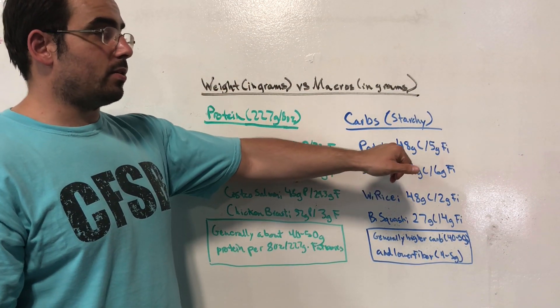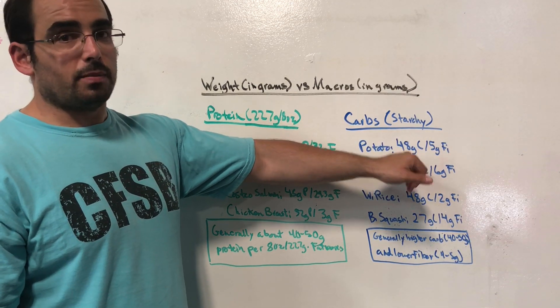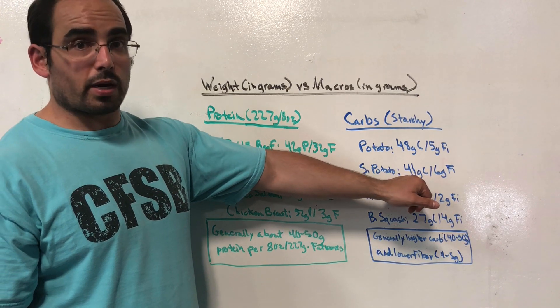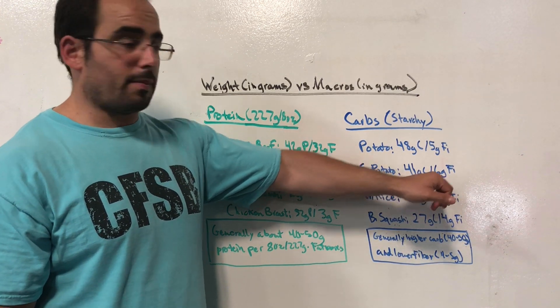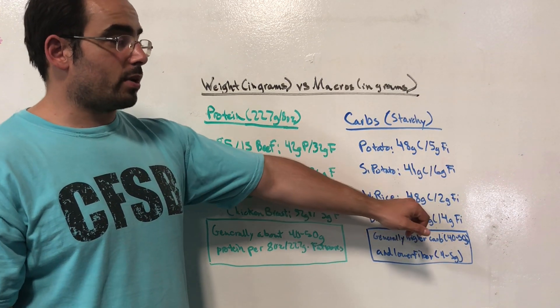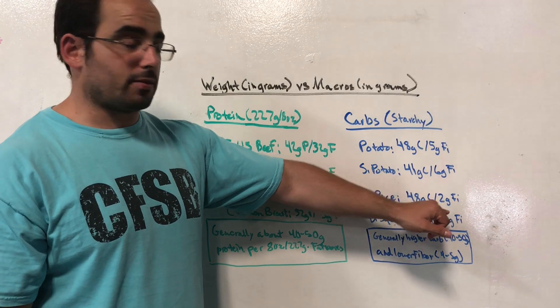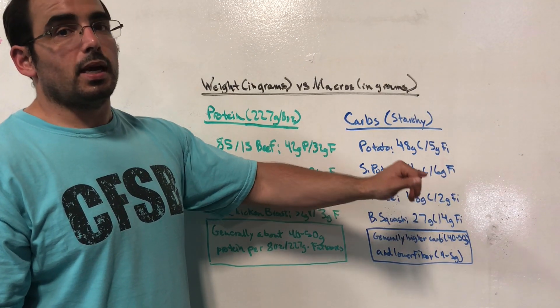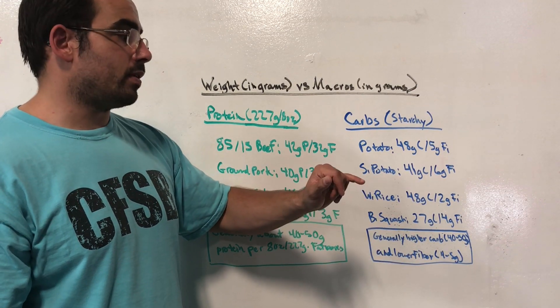So a white potato is 48 grams of carbs and five grams of fiber. A sweet potato has fewer carbs and slightly more fiber. White rice has 48 grams of carbs and two grams of fiber. And then butternut squash has 27 grams of carbs and four grams of fiber.